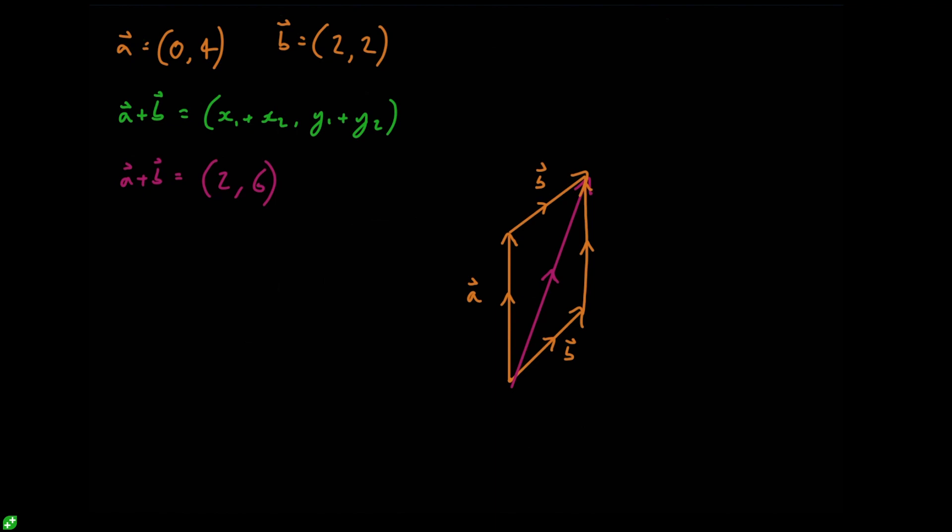Okay, so when you're adding vectors like this it's usually best to put the arrow somewhere in the middle of the line rather than at the end. And what we've essentially done here is created a parallelogram around this a plus b vector. And the reason I've done this is to show you that just like with regular numbers we can add vectors in any order that we like.